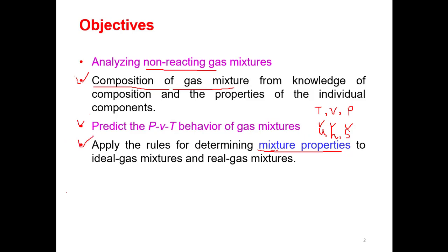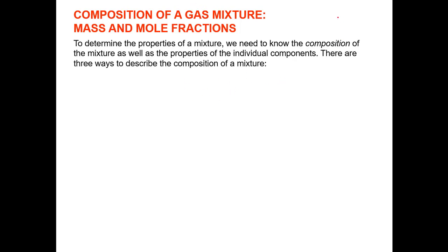To summarize, this chapter is based on how to analyze the composition, the pressure-volume-temperature behavior, and the properties of a non-reacting gas mixture. To start with the first objective: we cannot calculate the properties of the mixture — like pressure, volume, and temperature — until we know the composition of the mixture.